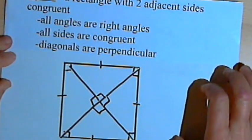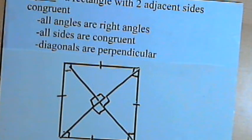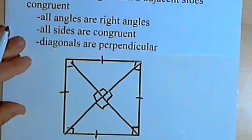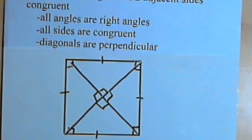So those are the properties for the rhombus, the rectangle, and the square. Take care — I'll see you next time.